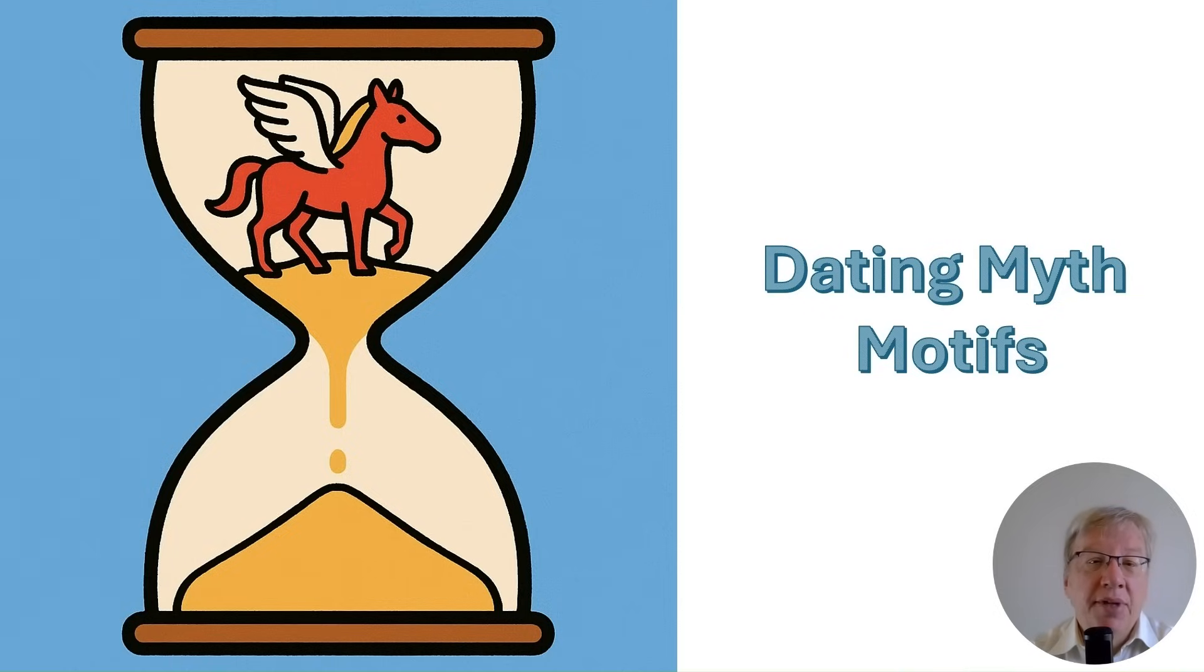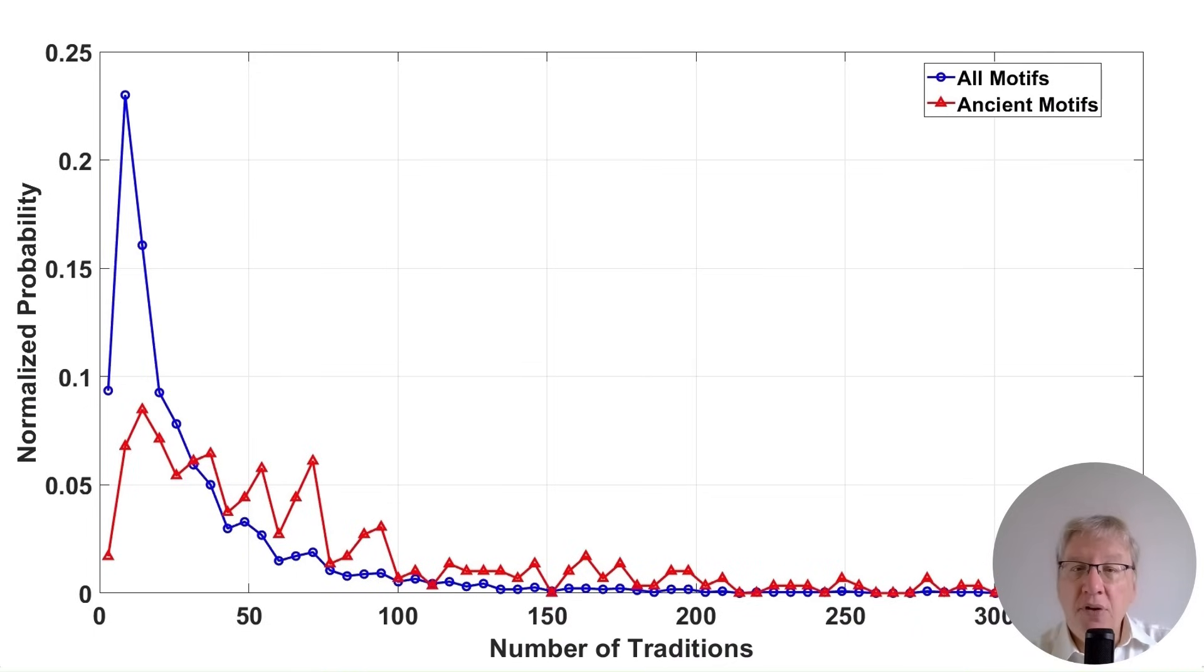Dating myth motifs is a problem that I've long considered and I'm glad to present a first approach to it. As we'll see, the method is quite straightforward given the model of motif life cycles presented in the last two videos. The difficulties will arise when feeding the model with ancient data. The graph on this slide shows a distribution of the number of traditions based on real world data.